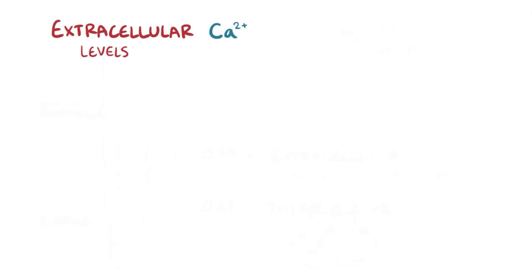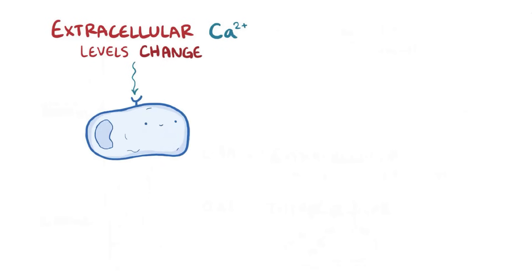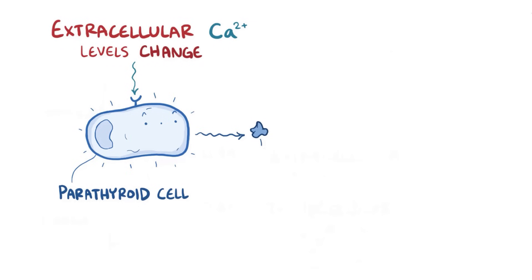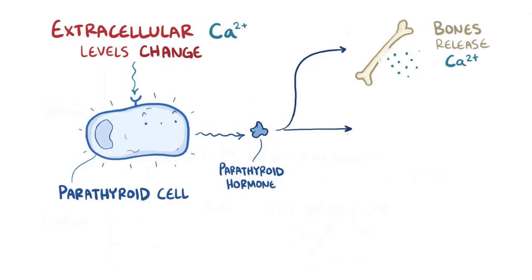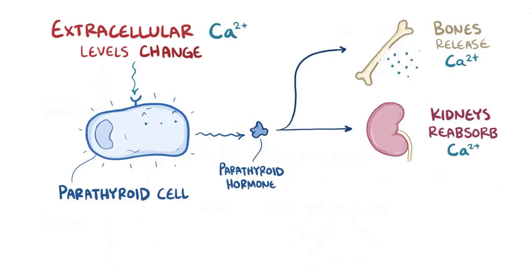When the body's levels of extracellular calcium change, it's detected by a surface receptor in parathyroid cells called the calcium-sensing receptor. This affects the amount of parathyroid hormone released by the parathyroid gland. The parathyroid hormone gets the bones to release calcium and gets the kidneys to reabsorb more calcium so it's not lost in the urine.